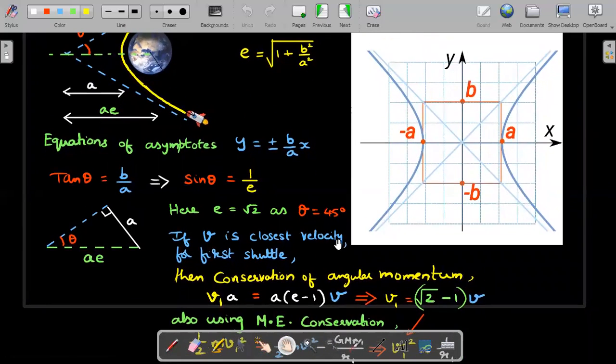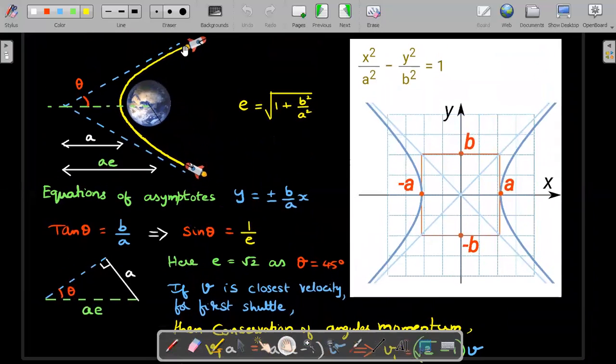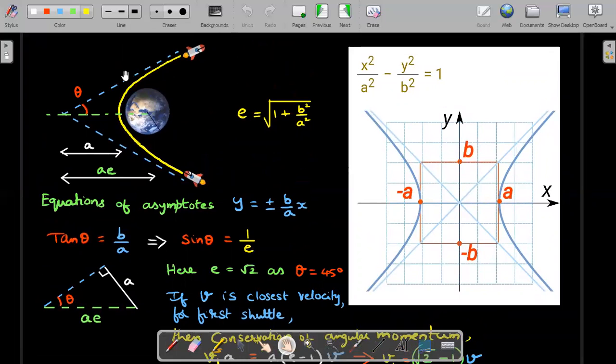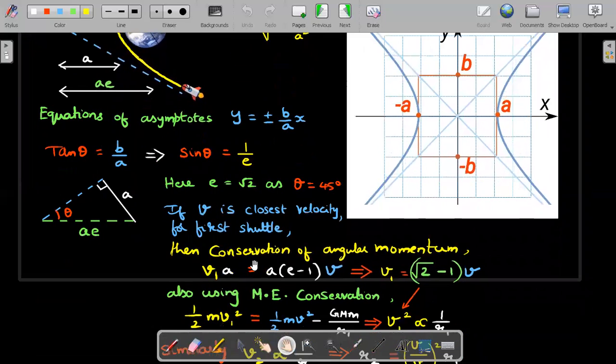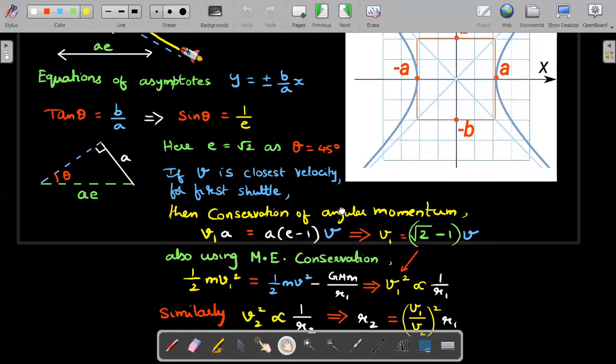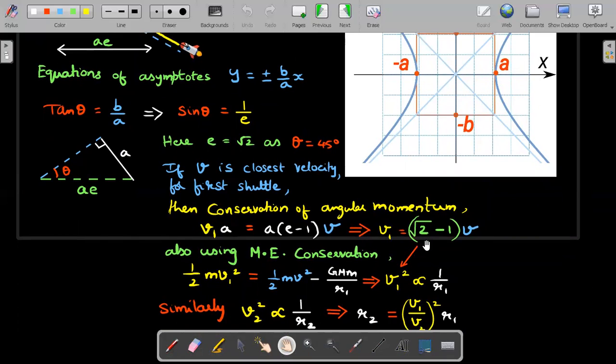Using this, now I'll use conservation of angular momentum and conservation of mechanical energy. So angular momentum conservation, which I'll use from the faraway distance point and also the closest distance point. So assume in the first space shuttle's case, the closest distance velocity is V. That means when it is here, very close, angular momentum would be MVR. MVR for the far point would be MV into perpendicular distance, which I already designated as A, therefore V1A. And when it is at the closer distance point, it would be M into this distance, what I said as A into E minus 1 into V. So A gets cancelled and E is root 2. Therefore, you'll get V1 is equal to root 2 minus 1 into V. Very important result. Keep it aside. Also use mechanical energy conservation for those two points.